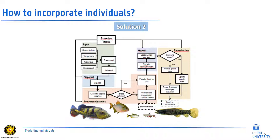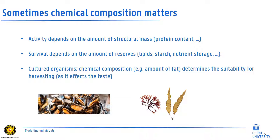The algorithms behind individual-based models are typically formalized as flowcharts of the actions. They are based on logical programming, but wherever possible with a sound mathematical background. Here you see such a flowchart for studying food web dynamics in the quite complex community of fish. Besides size-dependency of processes, chemical composition might also matter. For instance, activity can depend on the amount of structural mass from proteins, and behaviors and demography are dependent on fat reserves or any other stoichiometry. All these may equally determine the quality of organisms for harvesting.